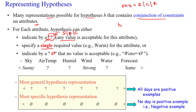The next constraint is specifying a single required value. For example, in this hypothesis we have specified the first attribute value as sunny. So for this attribute, the hypothesis will accept only sunny — it will not accept cloudy, and rainy also cannot be accepted, because it is specifically represented with a single exact required value.